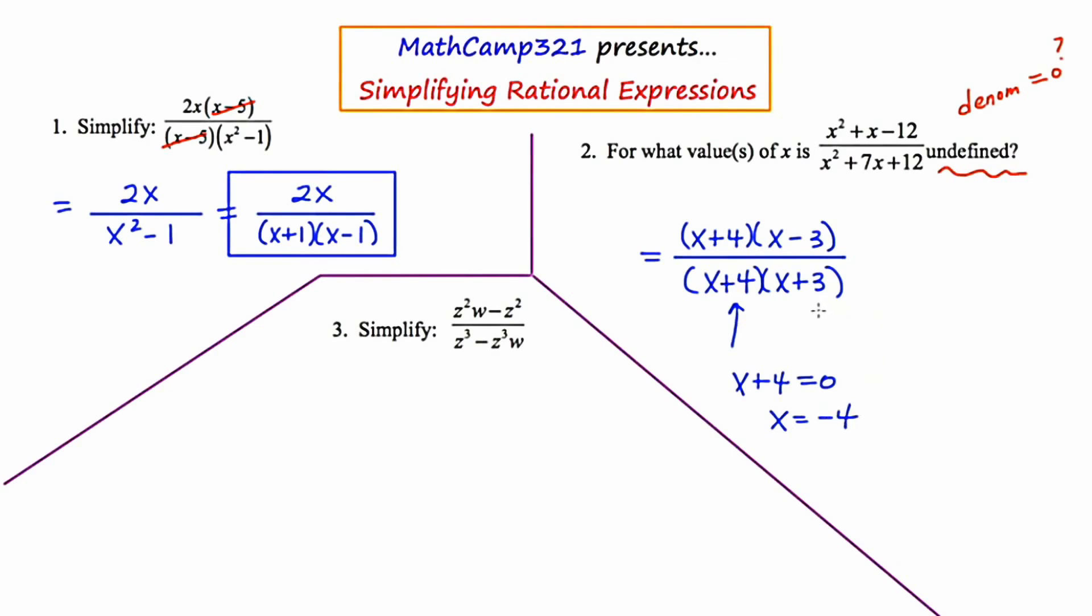And if you looked at the second factor, x plus 3, and you set that equal to 0, you're going to get x equals negative 3.